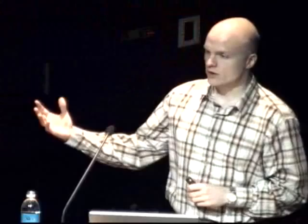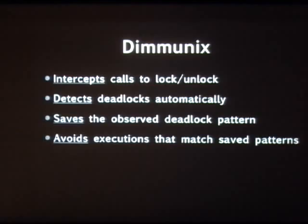With that general overview, let me talk about DEMUNIX, the tool that actually does this. There are four things DEMUNIX has to do: intercept the low-level calls to lock and unlock; detect deadlocks automatically at runtime; save the deadlock pattern to the persistent history file; and then avoid subsequently all executions that match these saved patterns. In essence, DEMUNIX is using the history of patterns as an immune system — these patterns are the antibodies I was mentioning earlier.